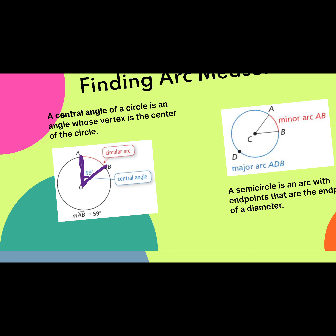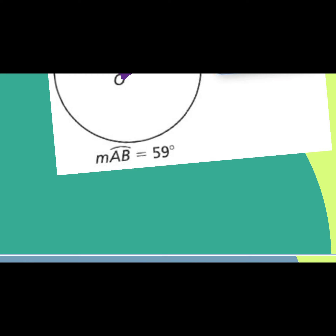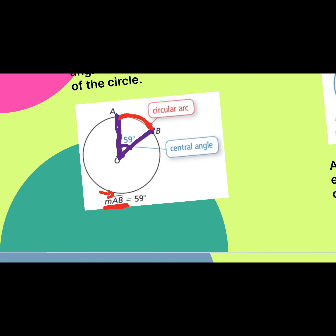Now, like you can see here in the red, they would call this arc that is created the circular arc — I'll probably just refer to it as the arc that those two lines create. Another thing to pay attention to is when we want to talk about the measure of an arc, it looks like this — the arc symbol, which kind of makes sense. So we would say the measure of arc AB is 59 degrees.